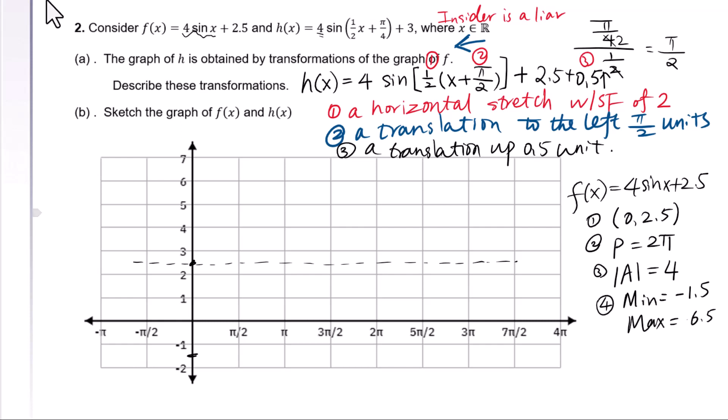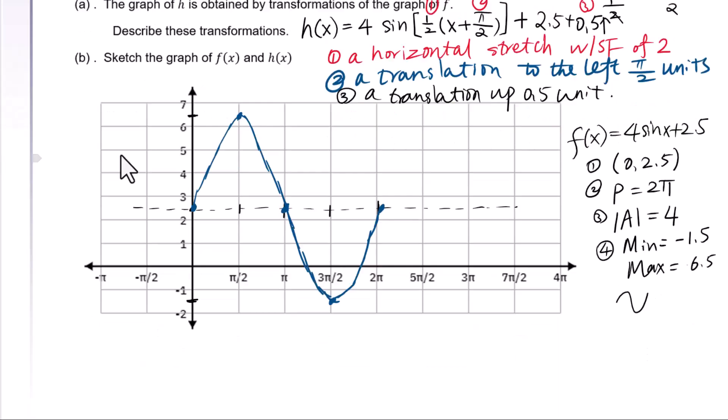-1.5 is here, 6.5 is here. 2π is the period: half, half, half. The pattern for sin(x) is this. 1, 2, 3, 4, 5. Let's connect.